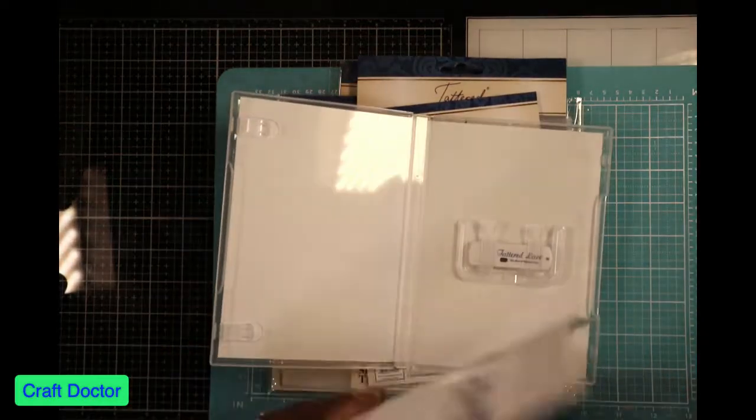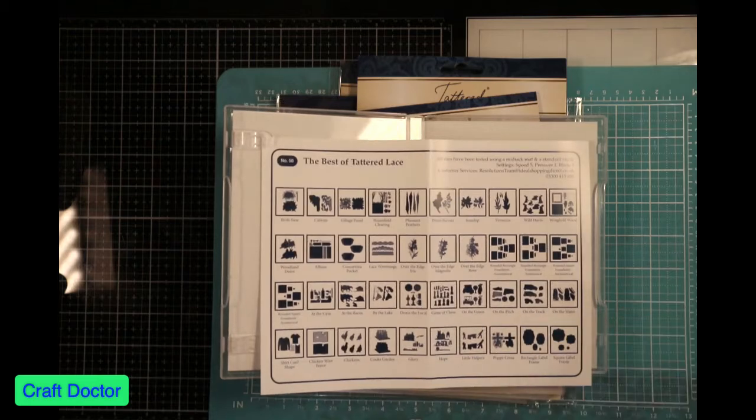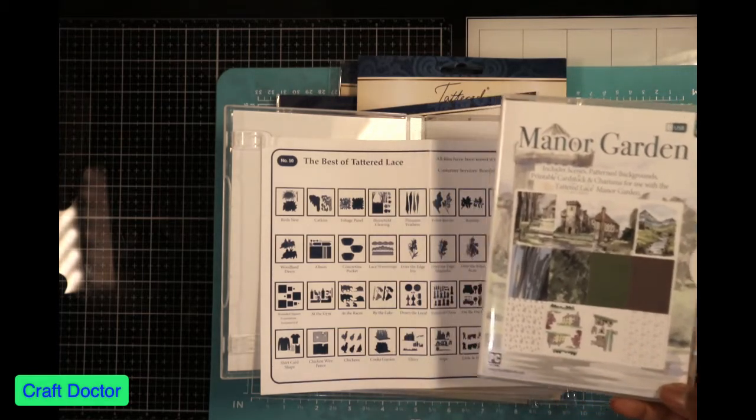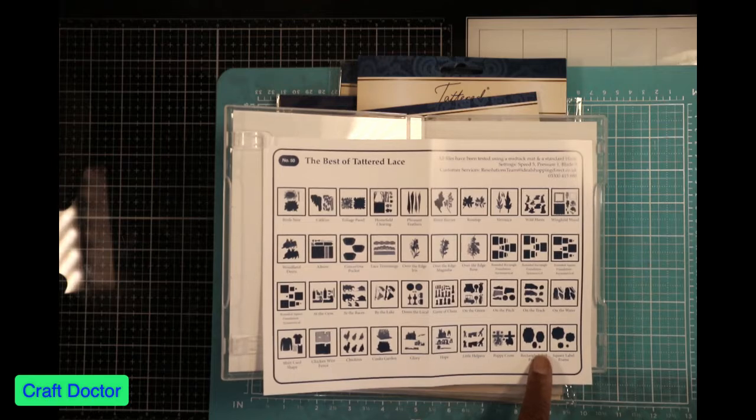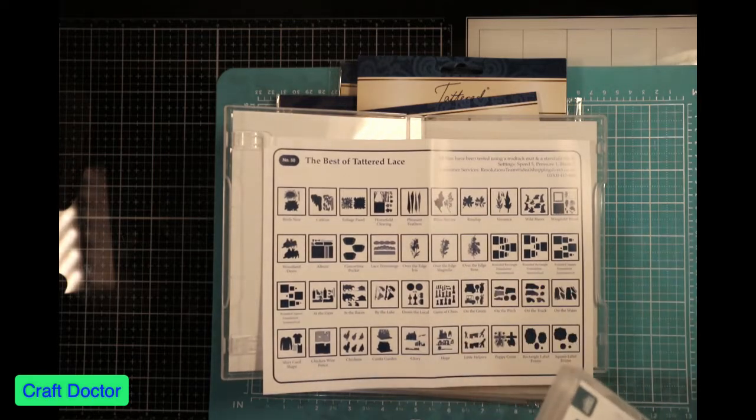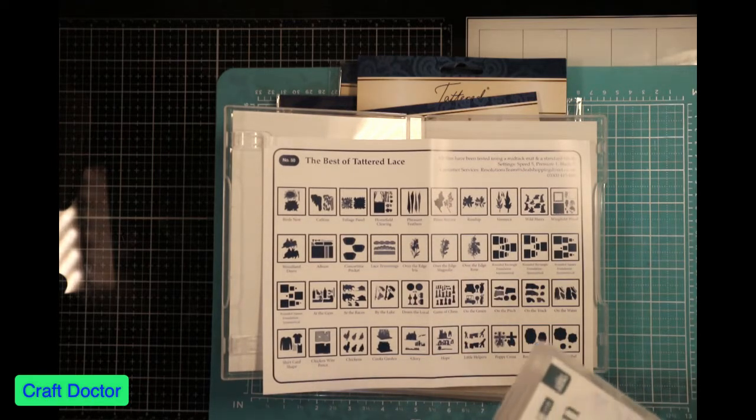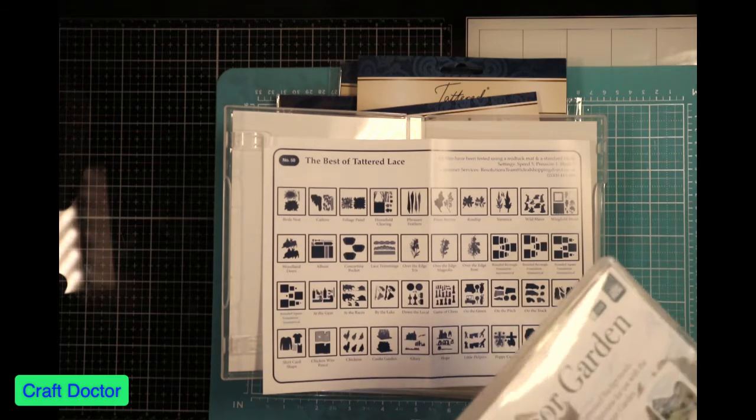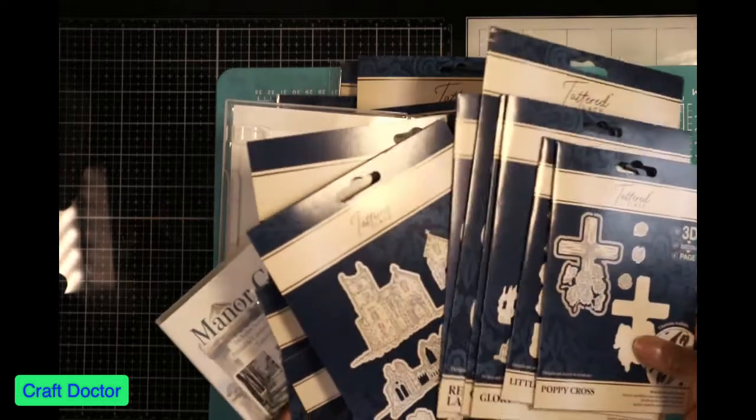One thing about this Best of that I don't like is that when you purchase a kit like I did, the Manor Garden, the Best of has it on it. So I bought all of these dies and the paper that goes with it, which is all of these.